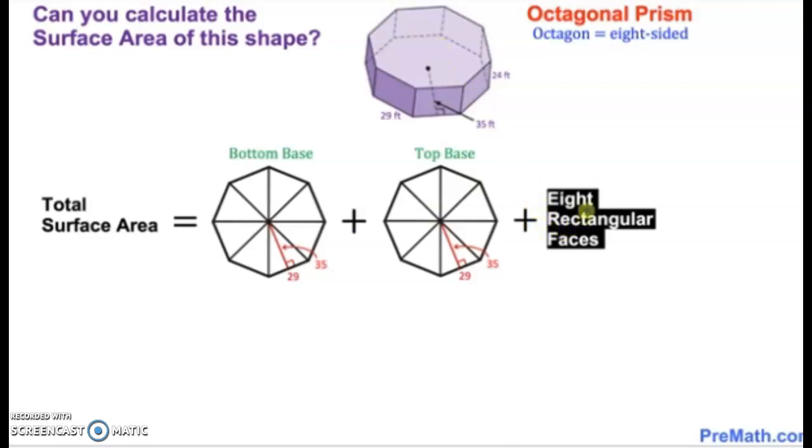On the shape itself, it has given us some measurements that can help us determine the length that will help us determine the area of the rectangles, and also the measurements we need to determine the triangles that will make up the octagon. You can see that if you look at an octagon, you can divide it up into eight triangles.